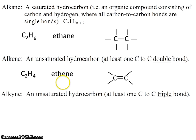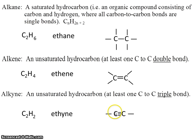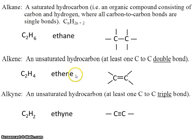An alkyne is a hydrocarbon that has a triple bond. For example, C2H2. In this case, the triple bond only allows for one hydrogen on each side — we call it ethyne. So notice that alkanes end in -ane, alkenes end in -ene, and alkynes end in -yne. The big difference is: alkanes are single bonds, alkenes are double bonds, and alkynes are triple bonds.